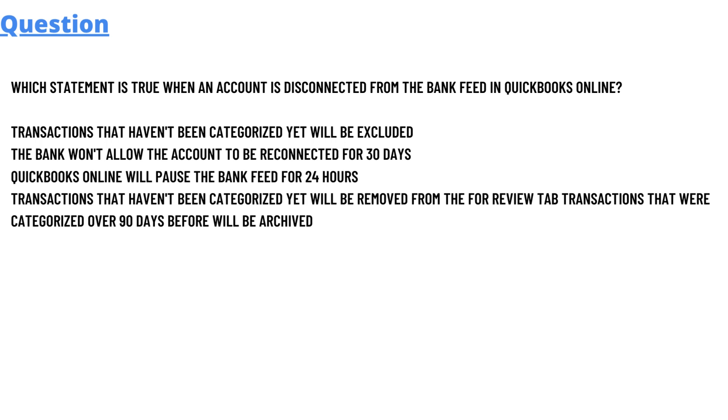The fourth option is: the transactions that haven't been categorized yet will be removed from the review tab. And the fifth option is: transactions that were categorized over 90 days before will be reviewed.